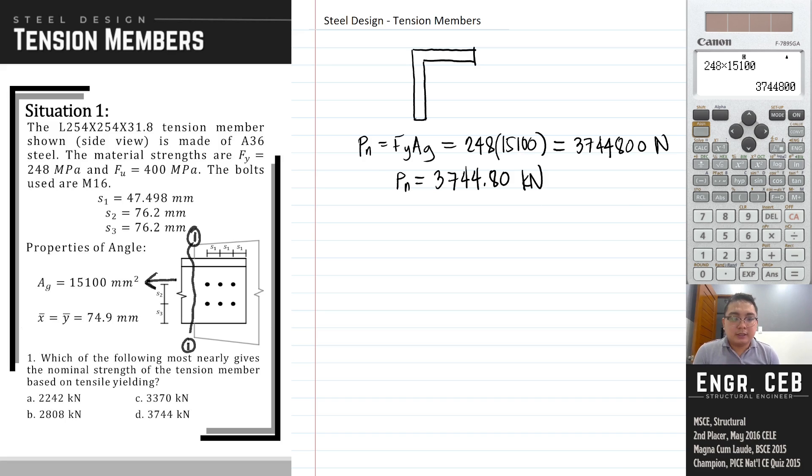So letter D. The answer is letter D, 3744 kN.